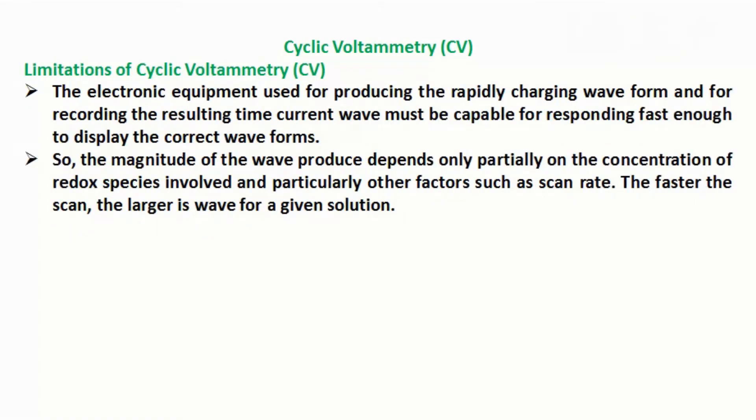Limitations of cyclic voltammetry CV. The electronic equipment used for producing the rapidly charging waveform and for recording the resulting time-current wave must be capable of responding fast enough to display the correct waveforms.